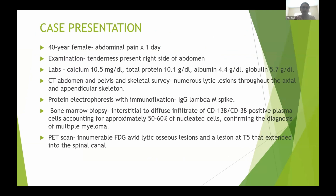A 40-year-old female presented with abdominal pain since last one day to the ER. On examination, there was tenderness present in the right side of the abdomen, which was a significant finding. Initial labs showed her calcium was high at 10.5, protein was high at 10.1, and albumin and globulin were also high at 4.4 and 5.7 respectively.